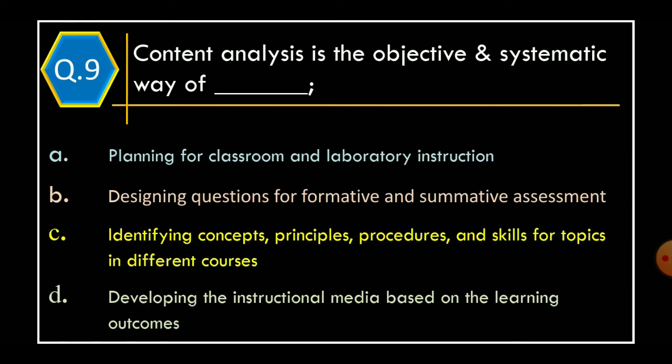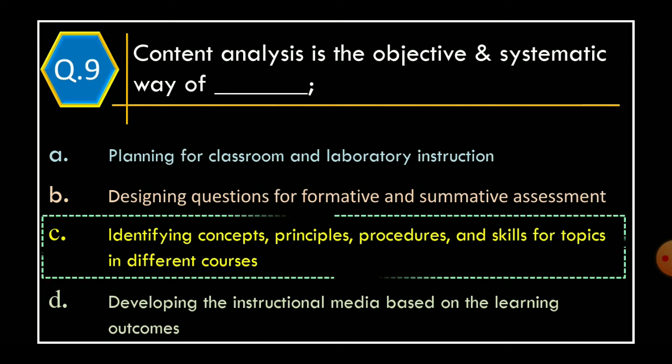Question 9: Content Analysis is the objective and systematic way of — Option A: Planning for classroom and laboratory instruction; Option B: Designing questions for formative and summative assessment; Option C: Identifying concepts, principles, procedures and skills for topics in different courses; Option D: Developing the instructional media based on the learning outcome. The correct option is Option C: Identifying concepts, principles, procedures and skills for topics in different courses.